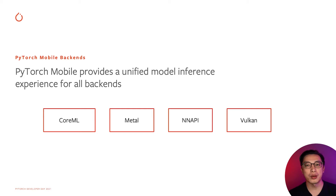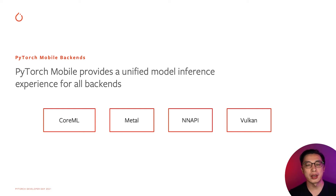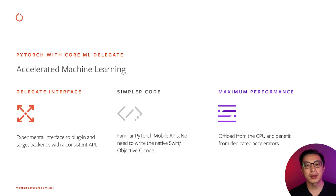On iOS, we support running models on GPU and Core ML. On Android, we support Vulkan and Android NNAPI. The PyTorch Core ML Delegate was introduced in PyTorch 1.10. It can delegate model execution to the Core ML framework at runtime on iOS devices.